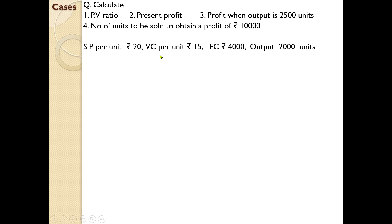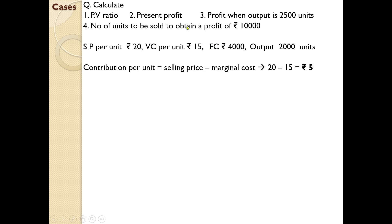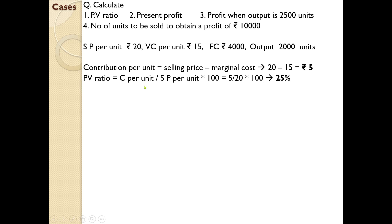Selling price per unit is 20, variable cost per unit is 15, so contribution per unit is 5. Fixed cost is 4,000 and output is 2,000 units. For PV ratio: contribution per unit divided by selling price per unit into 100 equals 5 divided by 20 into 100 — PV ratio is 25%. We can use per unit values to find PV ratio; it does not mean we need total amount values.